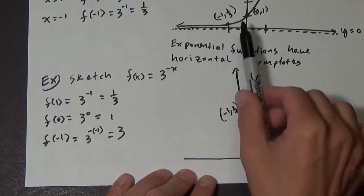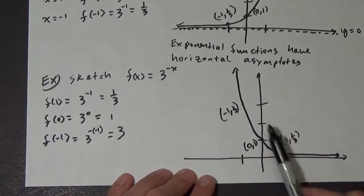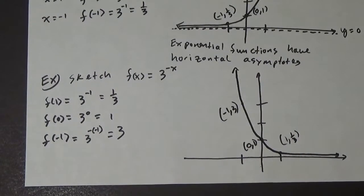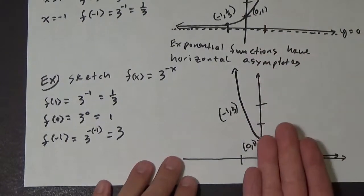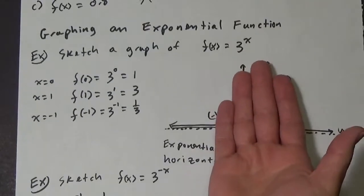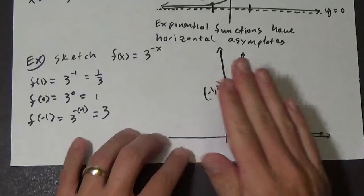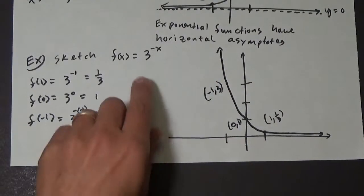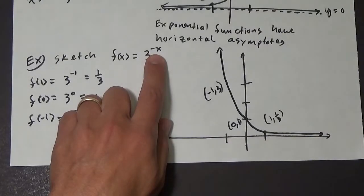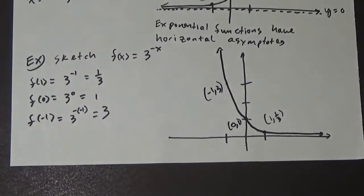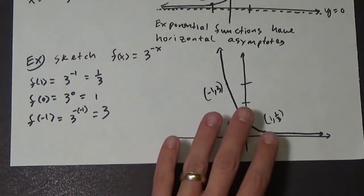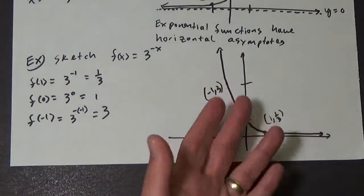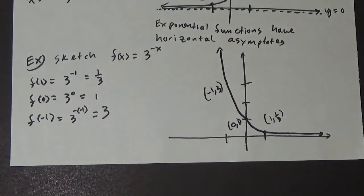Now notice that we still maintain our parent function shape. Basically this graph is the equation of the original graph reflected over the y-axis. And we could have predicted that because we have a negative inside the function. If we remember from our parent function technique, a negative inside the function is a reflection over the y-axis. So that makes sense.